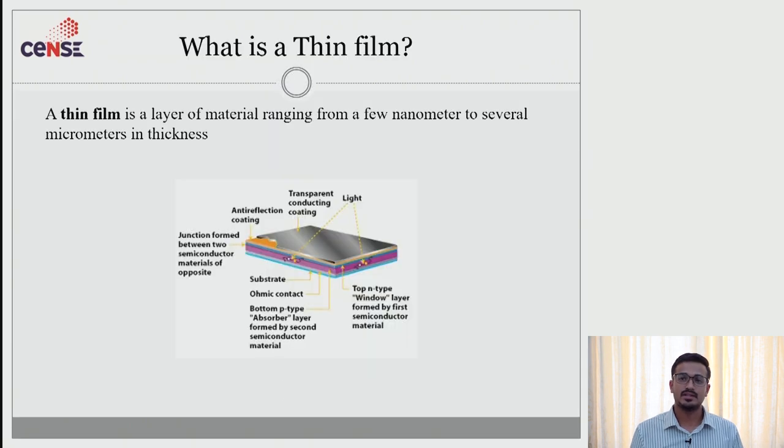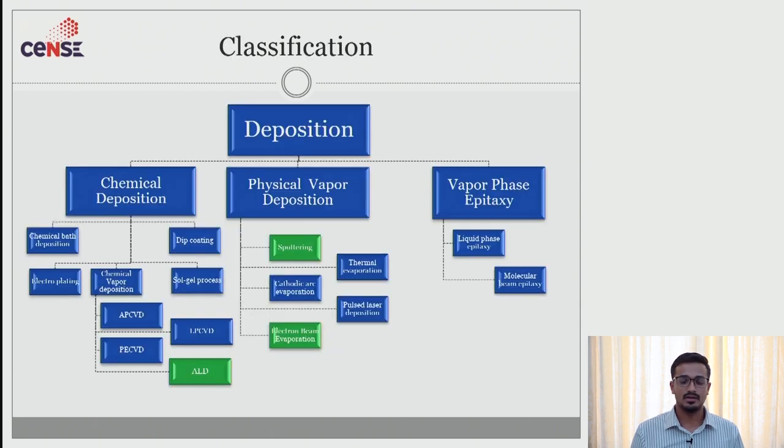Thin film is a layer of material ranging from a few nanometers to several micrometers in thickness. This is the classification of thin films. We have chemical vapor deposition, physical vapor deposition, and vapor phase epitaxy.